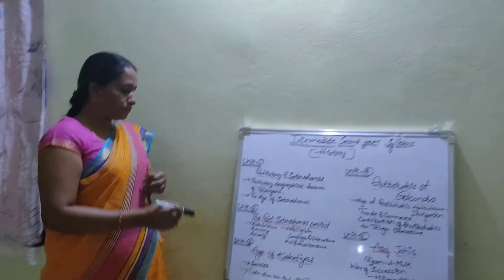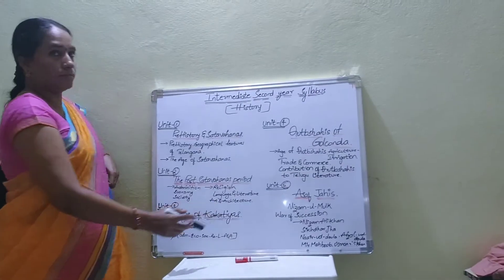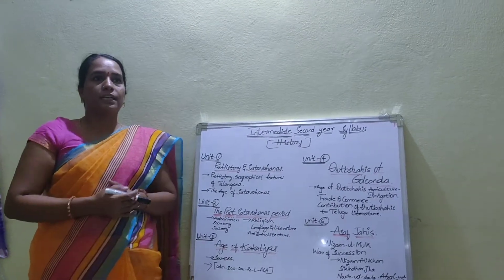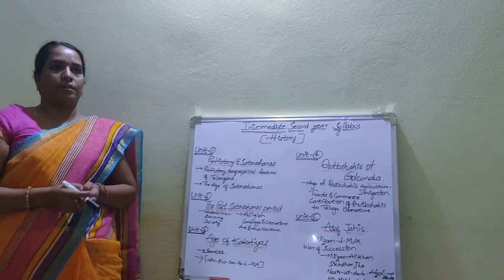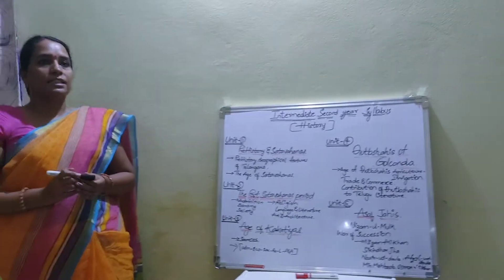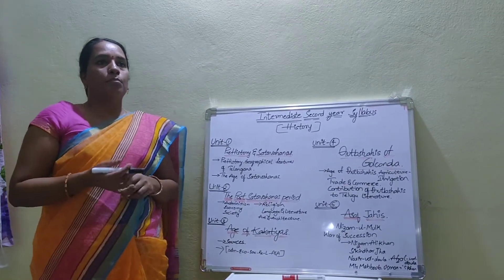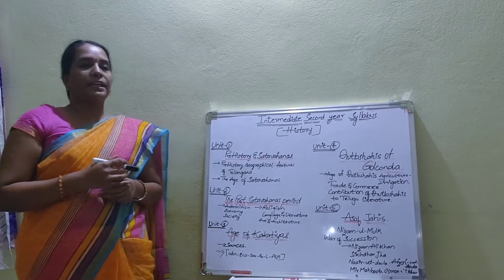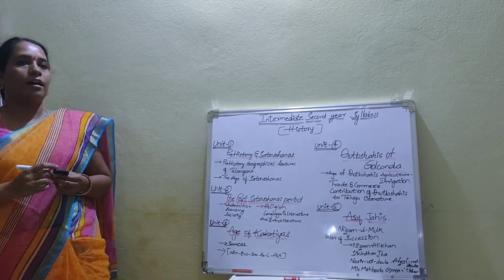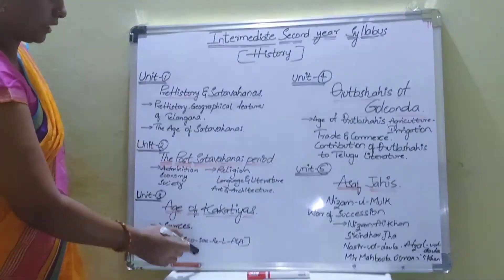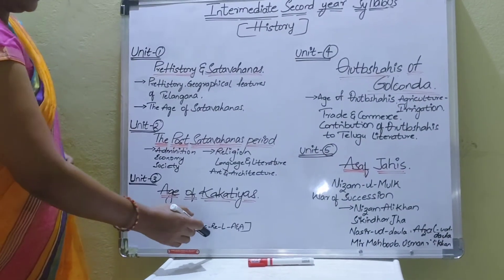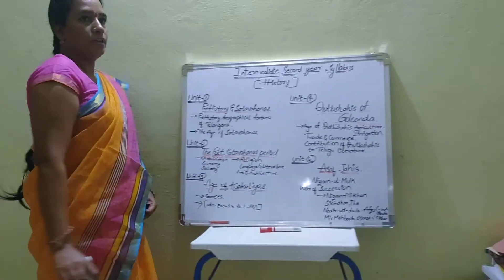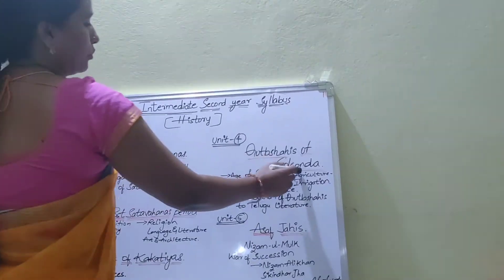The third unit is the Age of Kakathiyas. We will study the Kakathiyas Age, the Emerging Political Centre and Dominant Power. Also, we will see sources like Thousand Pillars, Motupalli Charter, and inscriptions like Palampeta, Chandupatra, etc. We will also cover the evolution of administration, economic, society, religious, languages, and art and architecture.